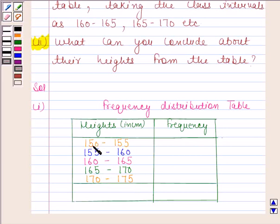Always remember that in the interval 150 to 155, 155 is not included. It is included in the next interval, that is 155 to 160. Similarly, 160 is not included in this interval. It is included in the next interval. So, keeping all this in mind, let us now fill the frequency column.